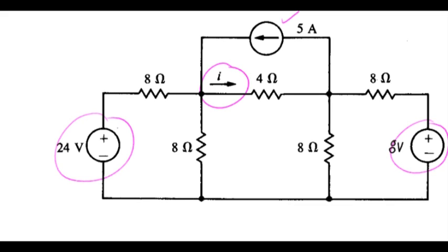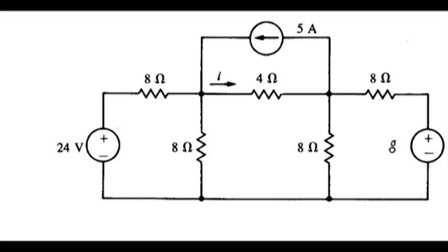Since we can pick any reference node that we like, it is helpful to choose one that minimizes the number of equations we have to write. For example, if I were to choose my reference node here, that doesn't help very much because the voltage source would not be grounded. So it's better if we choose the ground point such that it grounds as many of the sources as possible.